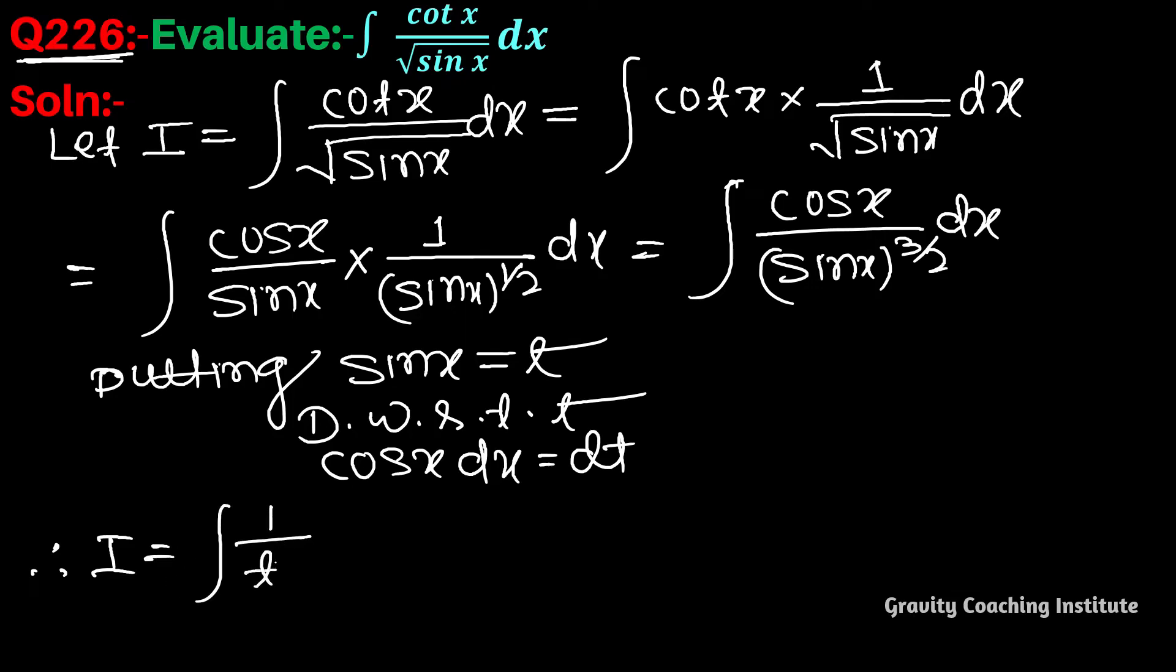1 by t to the power 3 by 2, और cos x dx के जगह dt, equal to integration t to the power minus 3 by 2 dt.